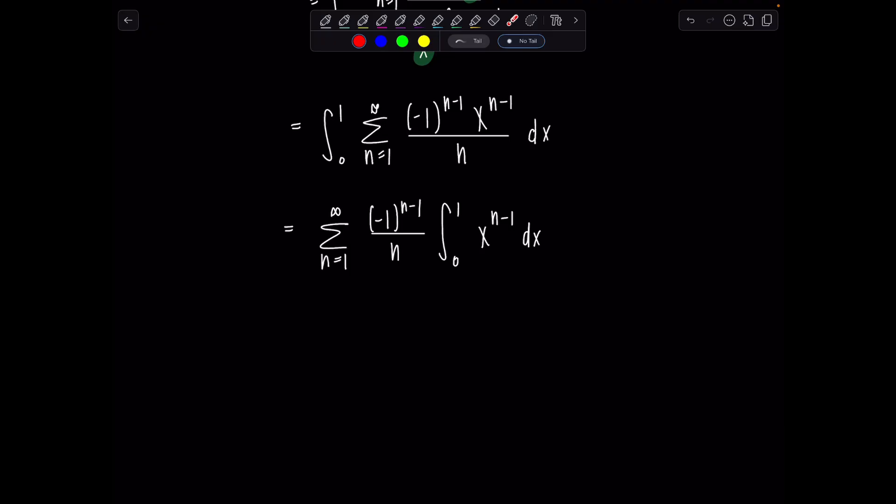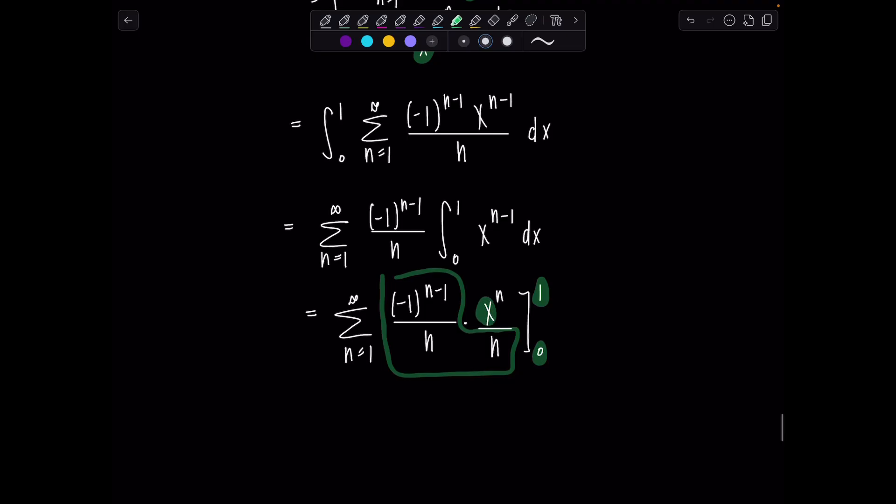So now let's think, how would we integrate? We're going to add 1 to the exponent, divide by the new exponent. So we have the sum, n equals 1 to infinity, negative 1 to the n minus 1 over n times, add 1, now I have x to the n over n. And this will get evaluated from 0 to 1. Now all of this involves n's, so they're just constants. I'm plugging in my limits of integration for the variable of the integral, which was x.